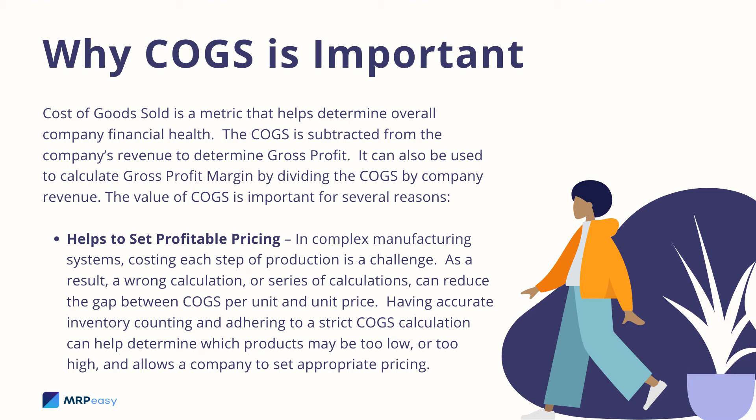Helps to Set Profitable Pricing. In complex manufacturing systems, costing each step of production is a challenge. As a result, a wrong calculation, or series of calculations, can reduce the gap between COGS per unit and unit price. Having accurate inventory counting and adhering to a strict COGS calculation can help determine which products may be priced too low or too high, allowing a company to set appropriate pricing.